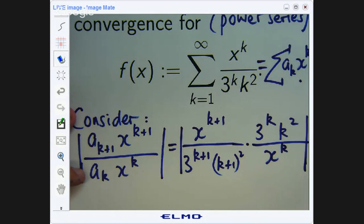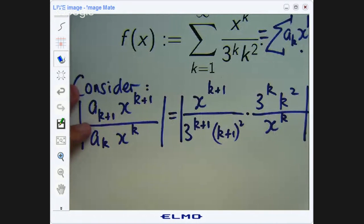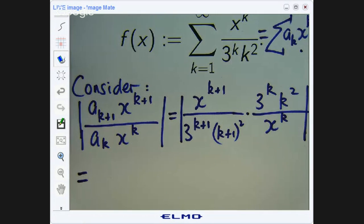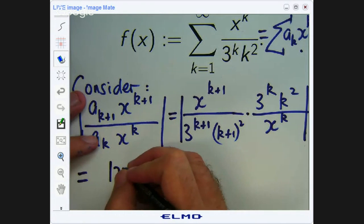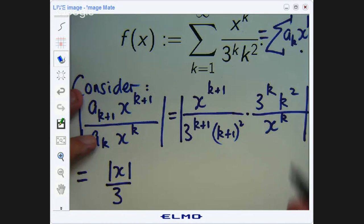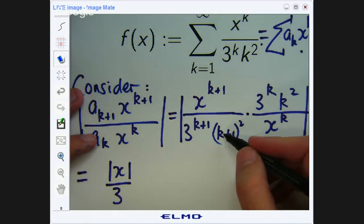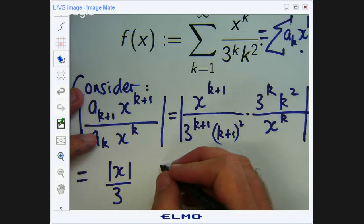You can see that the x to the k is going to cancel out. You'll be left with x. The 3 to the k is going to cancel out. You'll be left with 3 on the bottom. And then you've got a k squared and a k plus 1 squared. So let's simplify this a little bit. These things will cancel out and I'll be left with this.